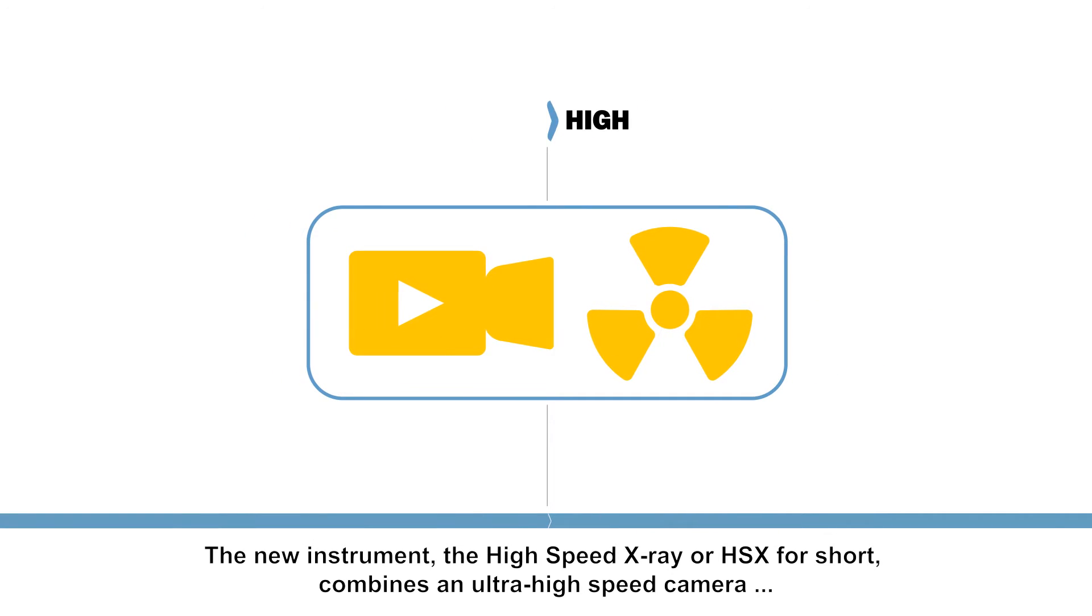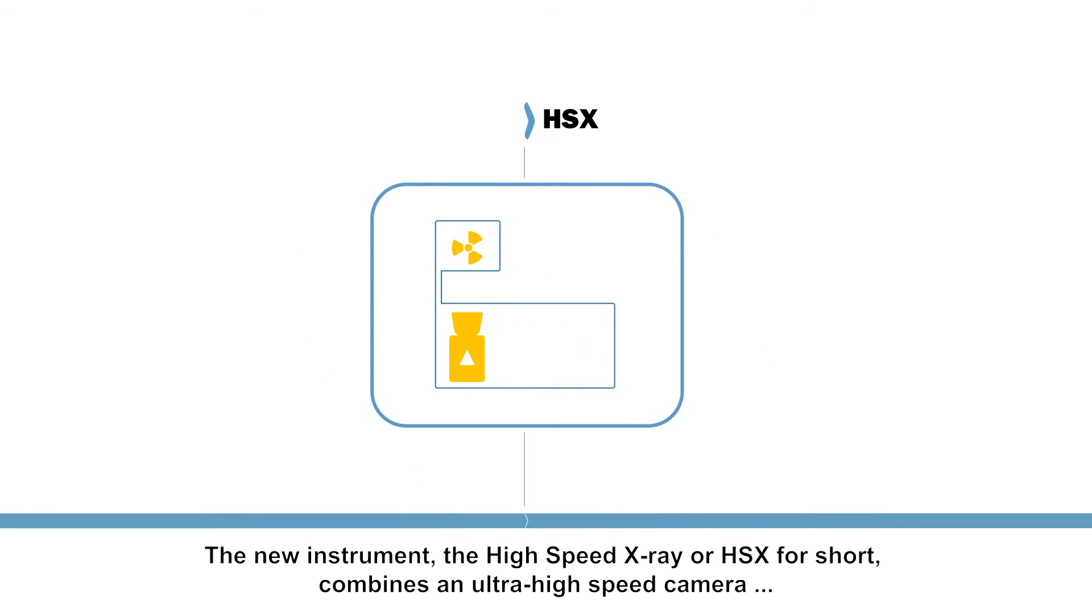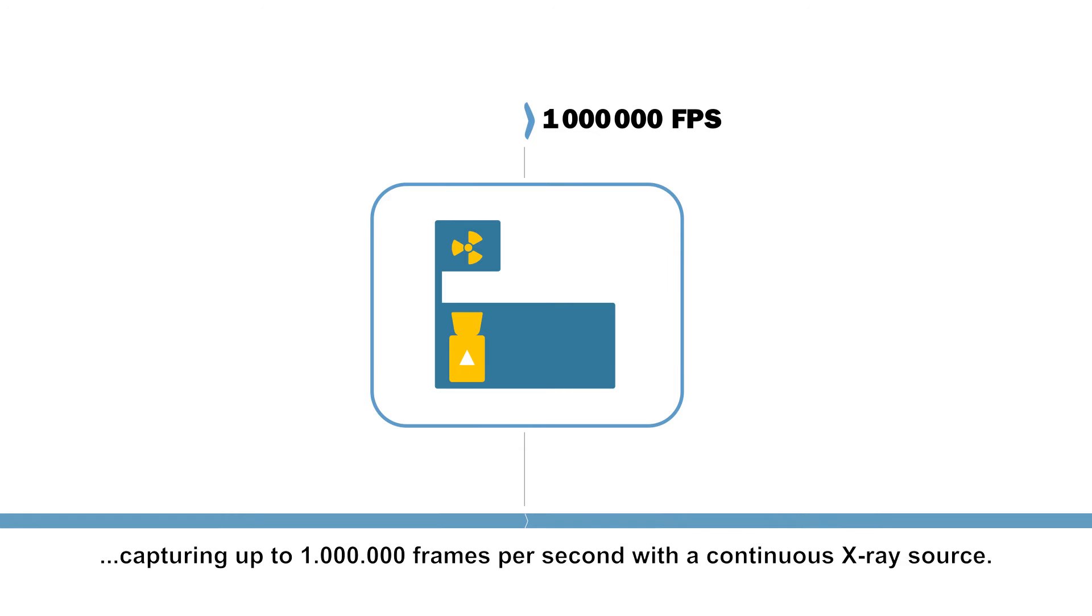The new instrument, the high-speed x-ray or HSX for short, combines an ultra-high-speed camera capturing up to one million frames per second with a continuous x-ray source.